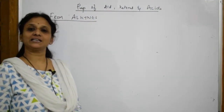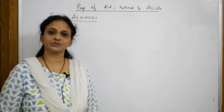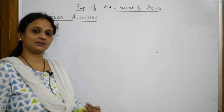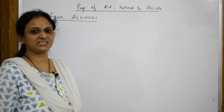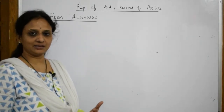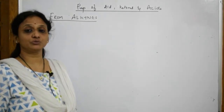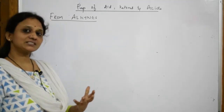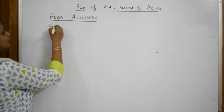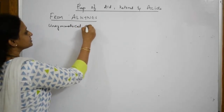Let us come back and prepare aldehydes and ketones from alkynes. Whenever you see an alkyne — whether it is ethyne, butyne, or any alkyne with a triple bond — we need to be careful about how to do the reaction. Let us start with an unsymmetrical alkyne first.